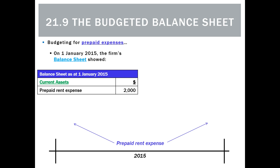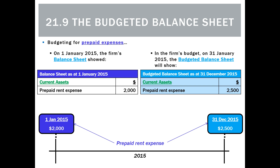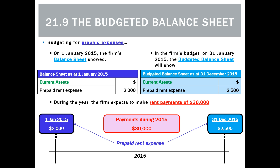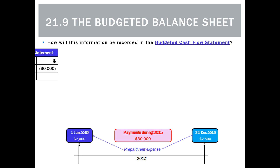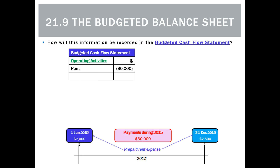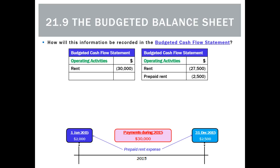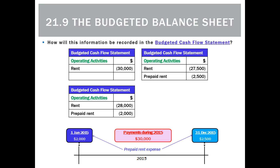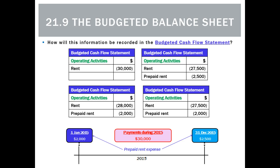Some items that might appear in the balance sheet are prepaid expenses. For example, on the 1st of January the firm's balance sheet showed prepaid rent of $2,000 — rent paid last period but for this period. At the end of the year, the balance sheet shows expected prepaid rent of $2,500. During the year, the firm expects to make rent payments of $30,000. We want to know how much would go in the cash flow statement under operating activities.